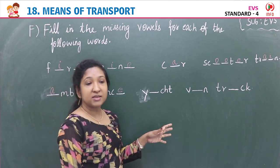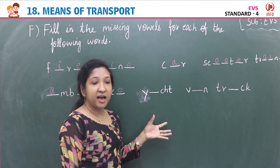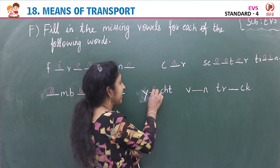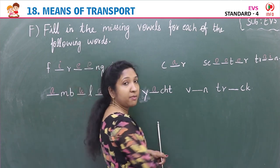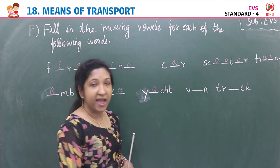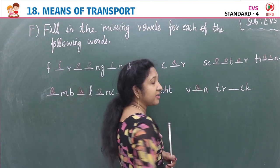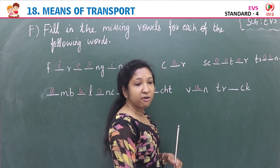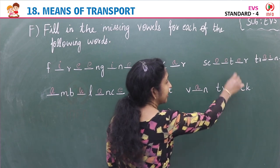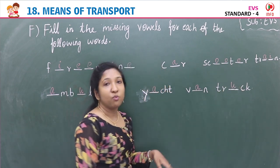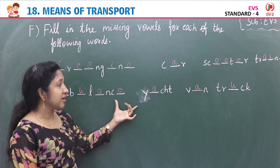Next image is a van — V-A-N, missing vowel A. Last image in the second row is a truck — T-R-U-C-K, missing vowel U. So these are the missing vowels filled in for each vehicle image.